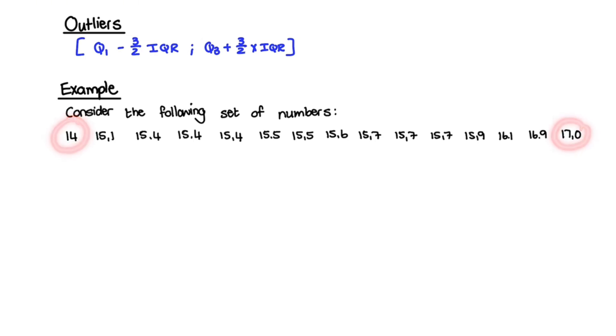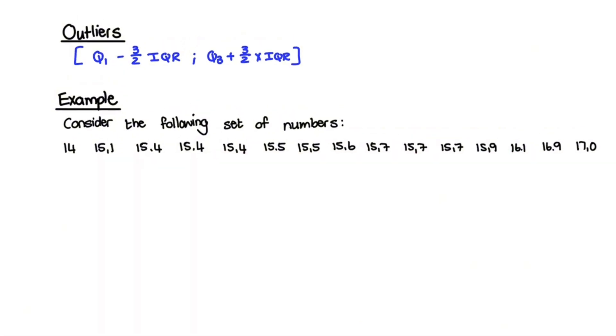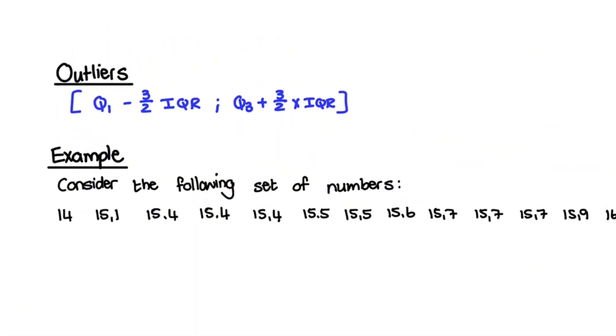We have 15 values that we will consider and we will try to identify which of these values do not fit the pattern of the rest of the data. Now before we do that, let us discuss what we have right here. So this is an interval. On the left side of our interval, we have the lower fence, and on the right side, we have the upper fence.